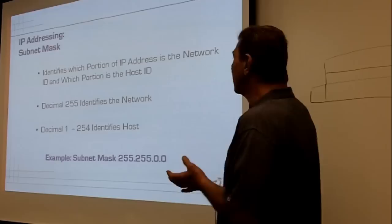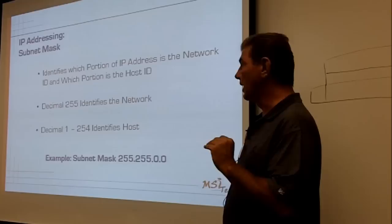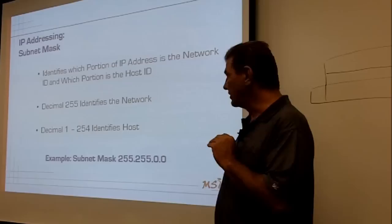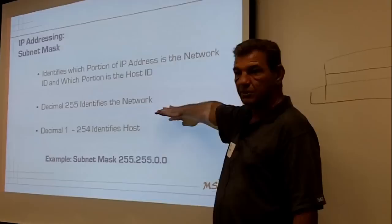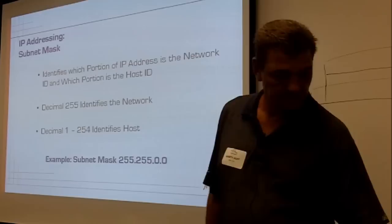The subnet mask tells us which part is the network ID and which part is the host ID. 255 identifies the network, and decimal values 1 through 254 identify the host. So it's important to remember you cannot use 255 or 0 as an IP address.